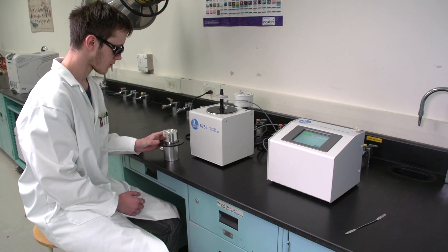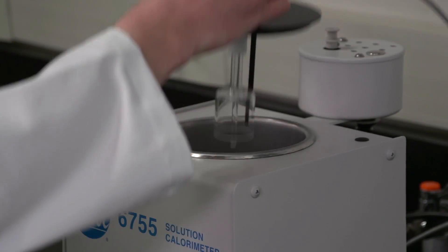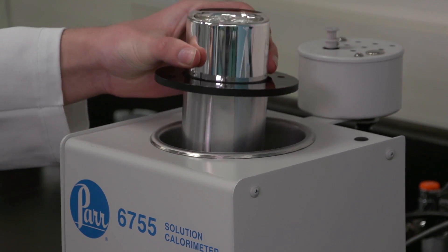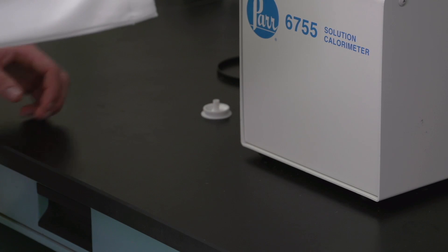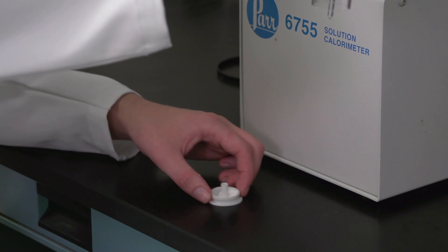Put the centering ring around the Dewar flask and lower it into the calorimeter. Set the Teflon dish on the bench next to the calorimeter.